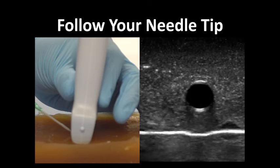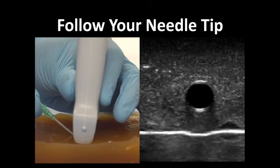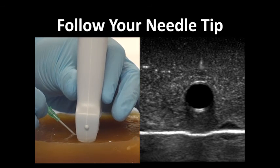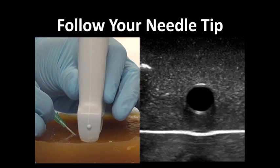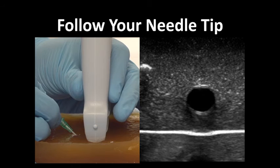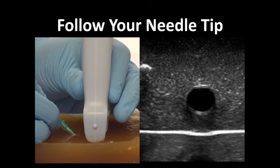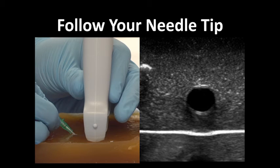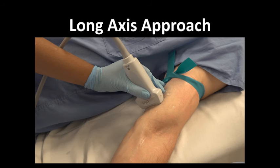The needle tip appears as a hyperechoic, bright white dot that you will need to follow closely as you insert. Because the needle tip may appear exactly the same as an ultrasound cross-section of any portion of the needle, it is important to continue moving your probe proximally and follow the needle tip as it approaches the vessel. If you lose your needle tip, remove the needle almost to the surface and start again. Never advance the needle if you cannot visualize the tip on the ultrasound screen.